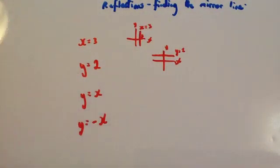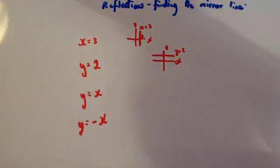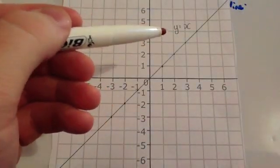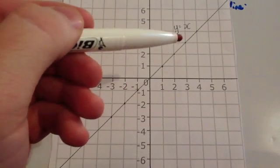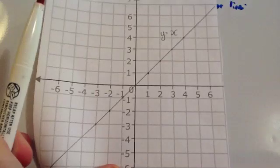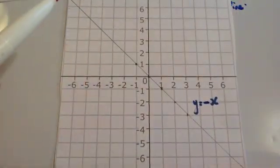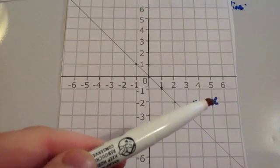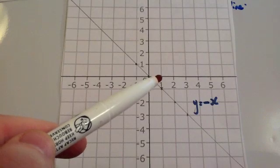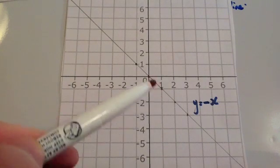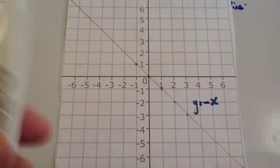Y equals x looks like this — it's the graph where all the x coordinates are the same as the y coordinates, like (1,1), (2,2), (3,3) and so on. Y equals minus x goes down diagonally, where all the heights are the negative of the x values. So if x is 1, the height is minus 1; if x is 2, the height is minus 2.